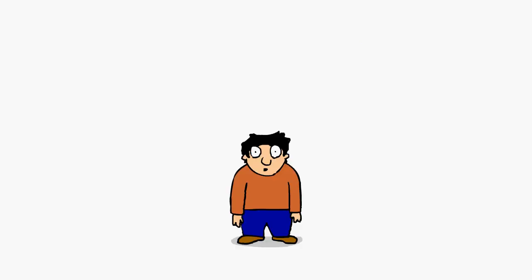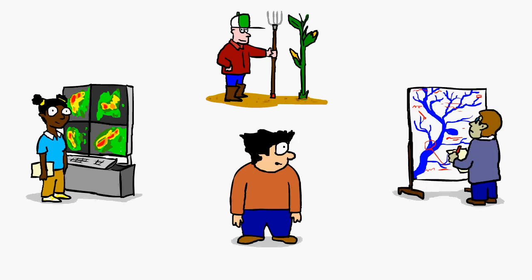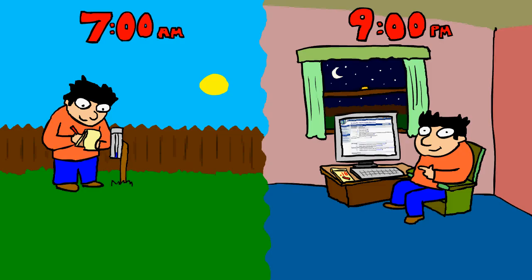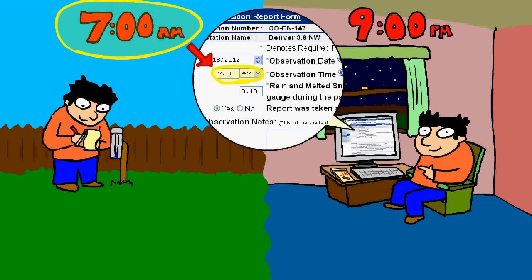For example, meteorologists, farmers, and flood forecasters. Even if you enter your data later on, as long as your report reflects the time you observed your gauge, your data will be on the map.